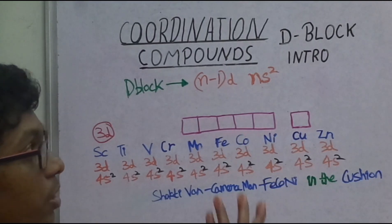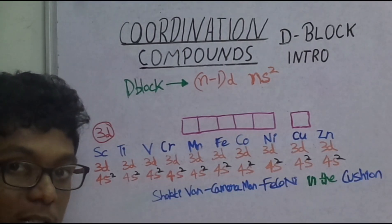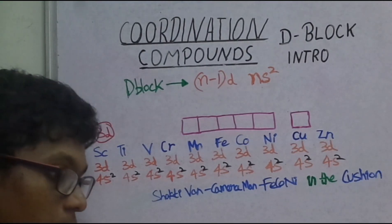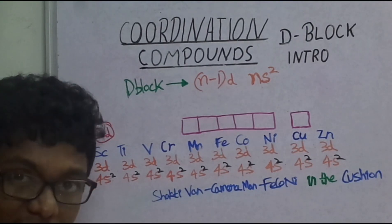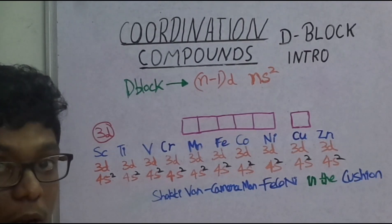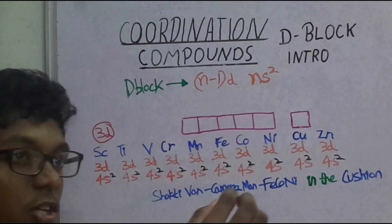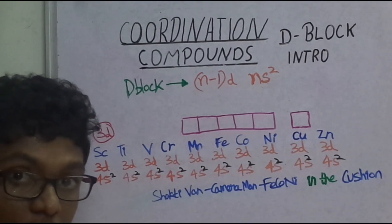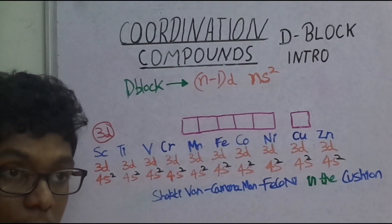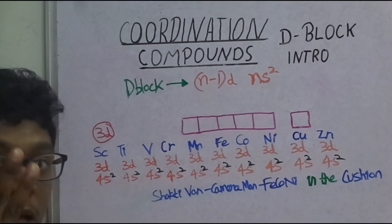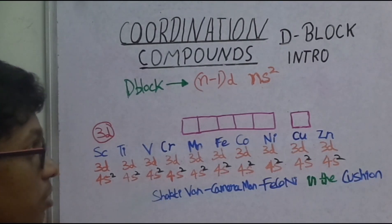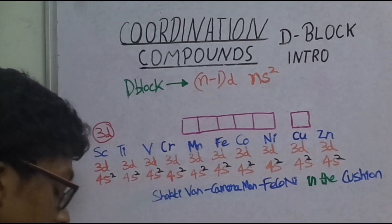we will talk about D-block metals. In coordination compounds, the central metal atom is a D-block metal. If you learn the configuration of the D-block metal, how to do the hybridization, geometry, and isomerism, then you can learn crystal fields. So first, without any further delay, let's start with D-block metals.